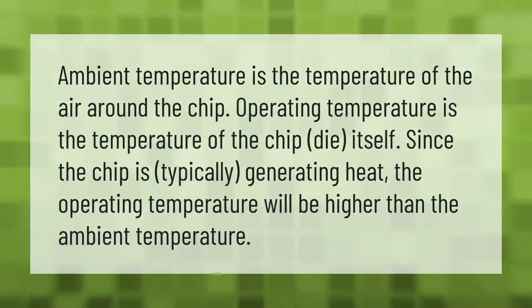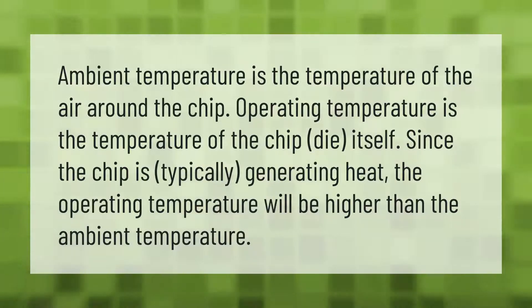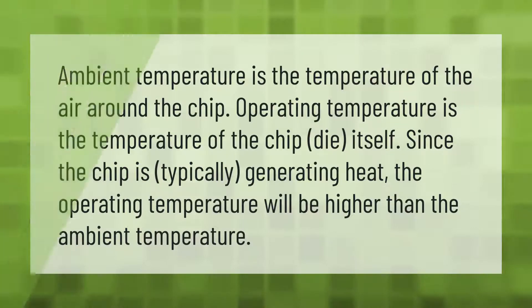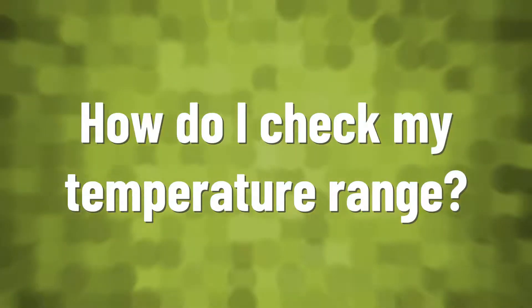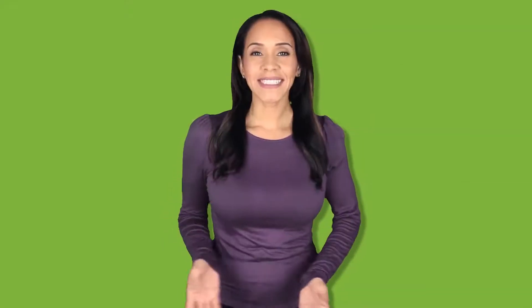Ambient temperature is the temperature of the air around the chip. Operating temperature is the temperature of the chip die itself. Since the chip is typically generating heat, the operating temperature will be higher than the ambient temperature.